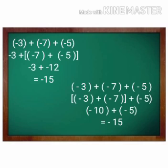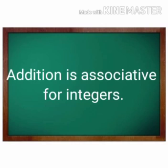Let us group them differently. Minus 3 plus minus 7 in one group, plus minus 5. So minus 3 plus minus 7 gives us minus 10, plus minus 5 is equal to minus 15. The sum in both cases is the same. That shows addition is associative for integers.